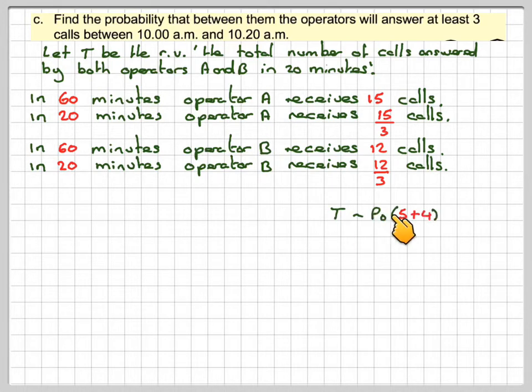So T will be Poisson, this is going to be 5 and this is going to be 4, 5 plus 4. So in total they're going to receive 9 calls. We want to consider Poisson with a mean of 9 calls.